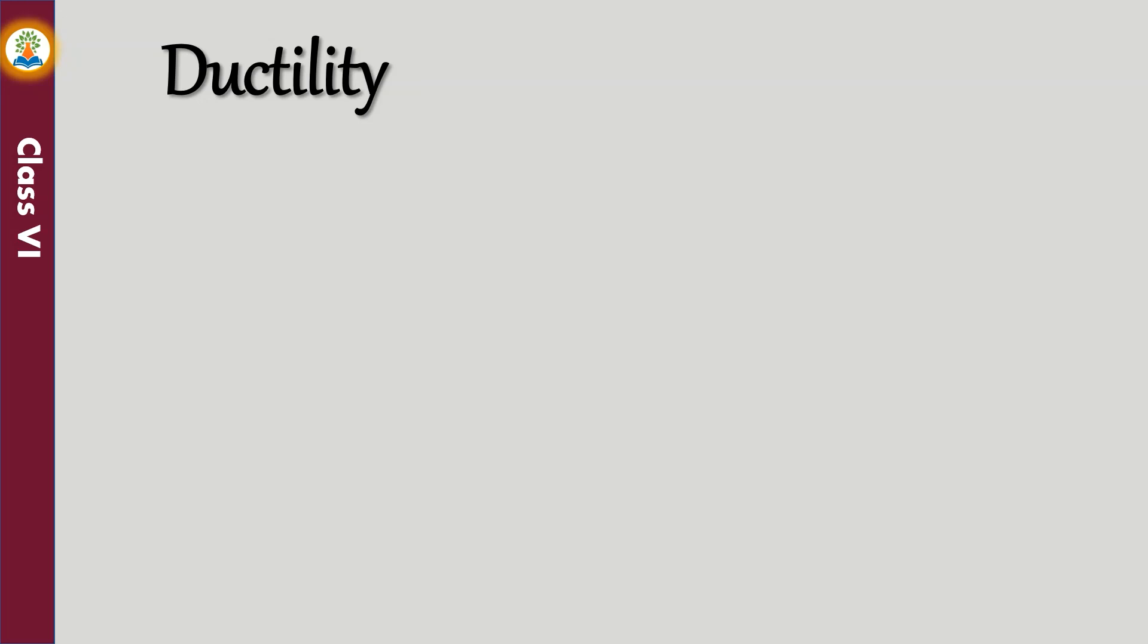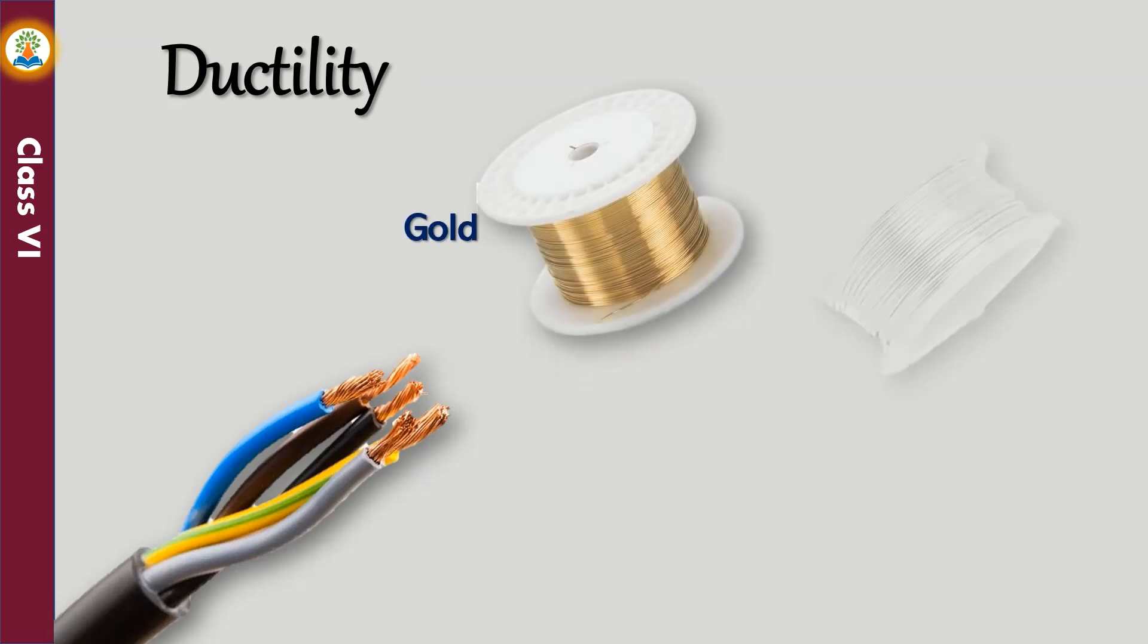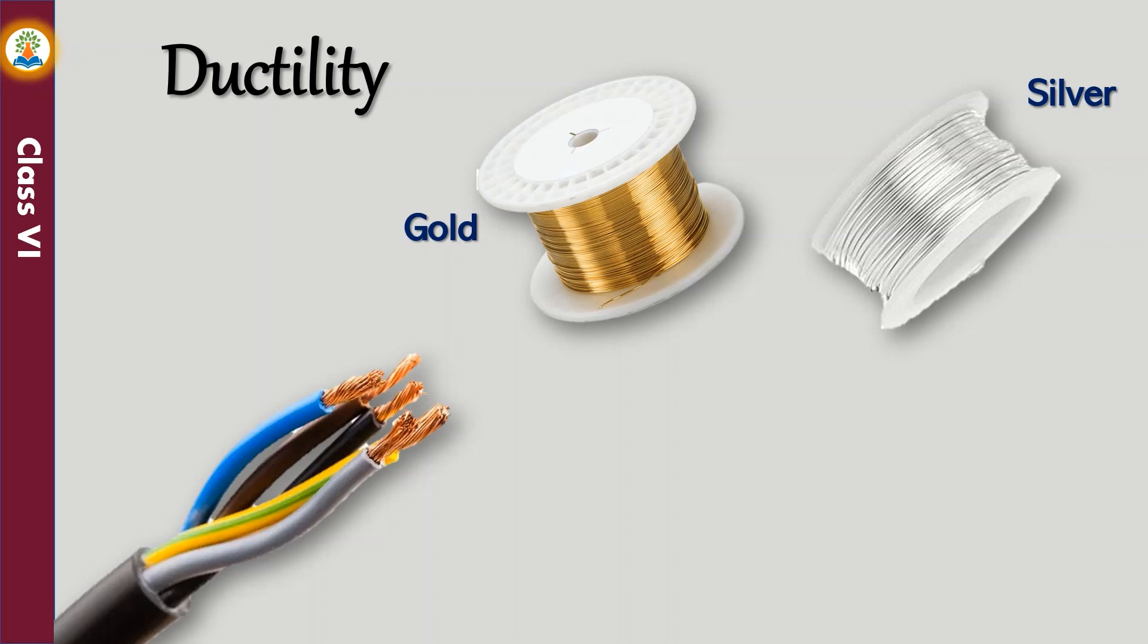Metals are ductile. They can be drawn into thin wires. The property which allows the metals to be drawn into wires is called ductility. Gold and silver are among the best examples of ductile metals. Tungsten metal is used to make the wires of the filaments of electric bulbs.